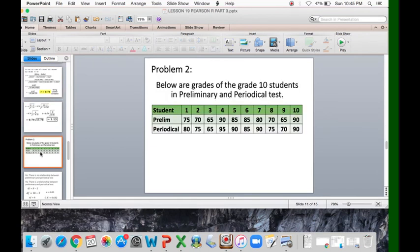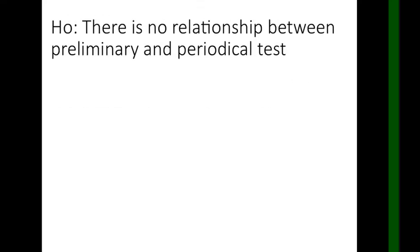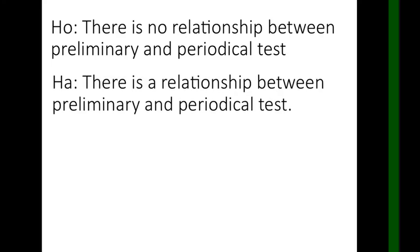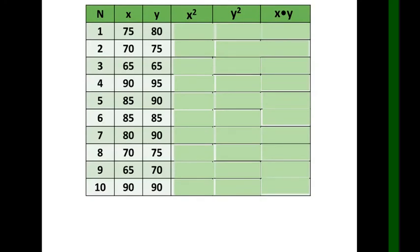Problem 2: Below are the grades of Grade 10 students in preliminary and periodical tests. We again perform hypothesis testing. The null hypothesis (H₀): there is no relationship between preliminary and periodical tests. The alternative hypothesis (Hₐ): there is a significant relationship between the two. Since n is still 10, df is again 8, and the critical value remains 0.632.